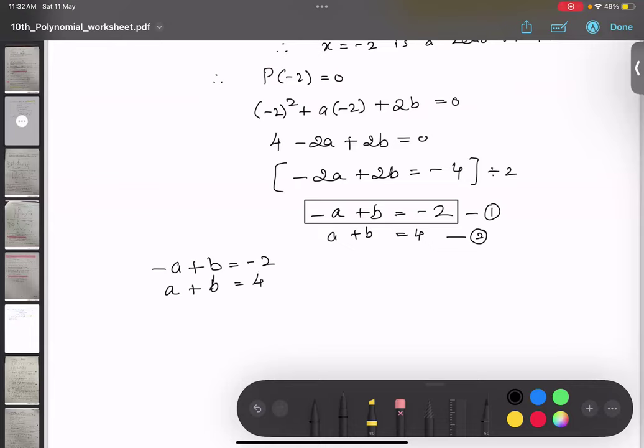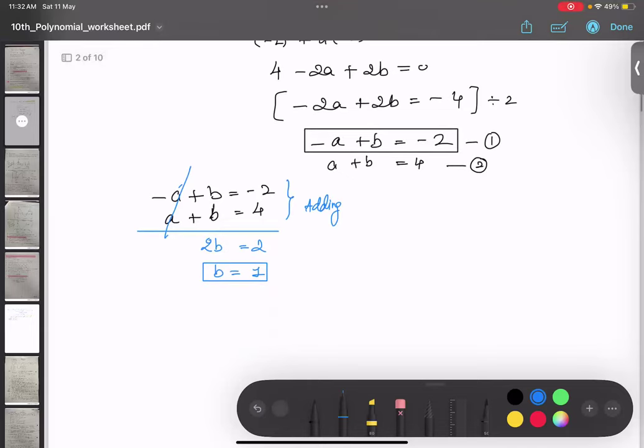So already a is same, so I will just cancel this. One is minus a, one is plus a. So b plus b is 2b. Basically we are adding equations one and two, not subtracting. And minus 2 plus 4 will become 2, so b value is 1. Now I will substitute this in any one of the equations.